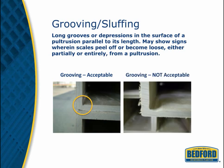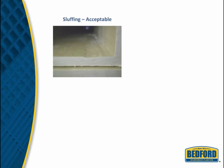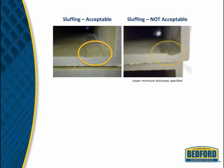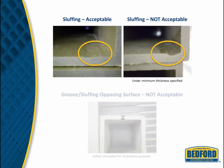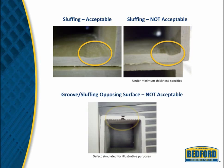The example on the right is not acceptable because the grooved portion is under the minimum thickness specified. Sloughing is also acceptable as long as it meets the same criteria. Any grooving or sloughing that occurs on opposing edges of the surface is not acceptable. The black marks on the bottom example simulate the location of opposing grooves or sloughing.